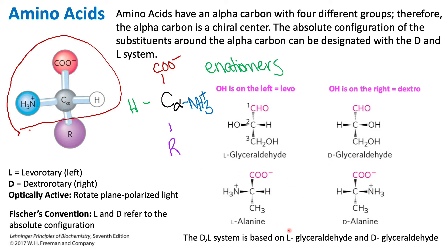Comparing this to amino acids, we do a very similar thing. We arrange the COO⁻ on top instead of the CHO, and we change the orientation of the amino group and the hydrogen. When the amino group is on the left, it is L; when the amino group is on the right, it is D. The L and D system is essentially based on L-glyceraldehyde and D-glyceraldehyde, as determined by Fisher. We use this convention to designate the absolute configuration of amino acids. Importantly, within our biological systems, 99% of the time our amino acids will be L-amino acids, not D-amino acids.